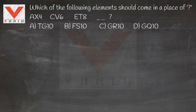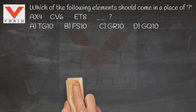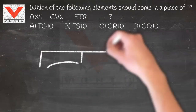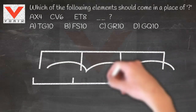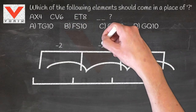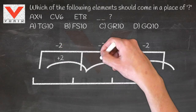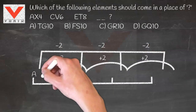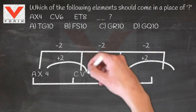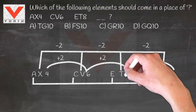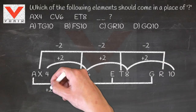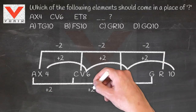b) fs10, c) gr10, d) gq10. In the first step, you can see: a+2=c, c+2=e, e+2=g.